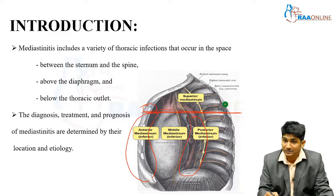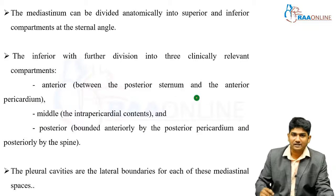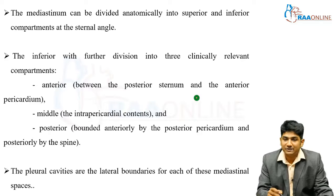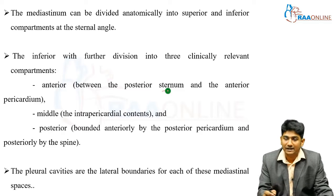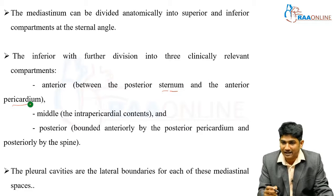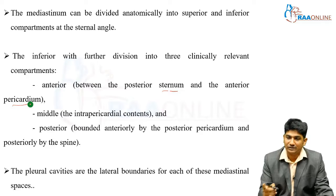To summarize: at the sternal angle, a line divides the mediastinum into superior and inferior. The inferior mediastinum is classified into anterior mediastinum — from the posterior sternum to the anterior pericardium — middle mediastinum, which contains the intrapericardial cavity (heart and great vessels), and posterior mediastinum, bounded anteriorly by the posterior pericardium to the spine. The pleural cavities form the lateral boundaries.